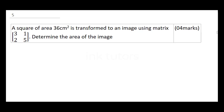Question 5 says: a square of area 36 cm² is transformed to an image using a matrix — matrix [3, 1, 2, 5], which is a 2 by 2 matrix. Determine the area of the image.